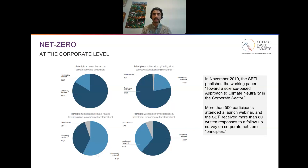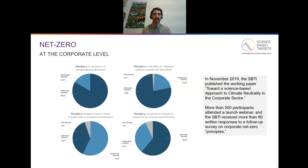Back to the SBTI's net zero definition. In November of 2019, the SBTI published its working paper toward a science-based approach to climate neutrality in the corporate sector, and more than 500 participants tuned in to the launch webinar. We received more than 80 written responses to a follow-up survey about the net zero principles. The first principle was that corporate net zero targets and claims should result in no net impact on the climate. The second was that they should be made in line with one and a half degree mitigation pathways. The third and fourth mainly relate to companies' strategy and investments and how those relate to a net zero economy. The feedback received was strongly in support of all four principles.